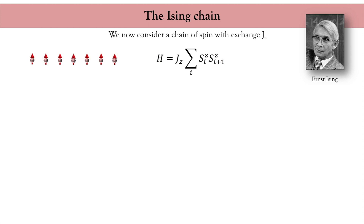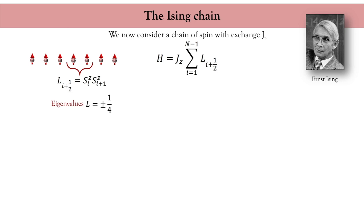I take a slightly different approach and rewrite the Hamiltonian in terms of a new operator L_{i+1/2}, which is simply the product of two neighboring spin operators, so that the Heisenberg Hamiltonian is the sum of all L_{i+1/2} in the system. To study the statistical properties of this chain, I calculate the partition function. This operator L_{i+1/2} possesses two eigenvalues: +1/4 and -1/4, corresponding to parallel and antiparallel alignment of neighboring spins. From the partition function I can readily compute the energy of the system, recalling that beta is the inverse temperature 1/(k_B T).